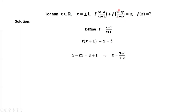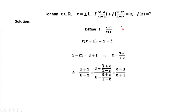We want to rewrite (3 plus x) over (1 minus x) in terms of t. We replace x by (3 plus t) over (1 minus t) here and here. Then we have (3 plus x) over (1 minus x) equals (t minus 3) over (t plus 1).